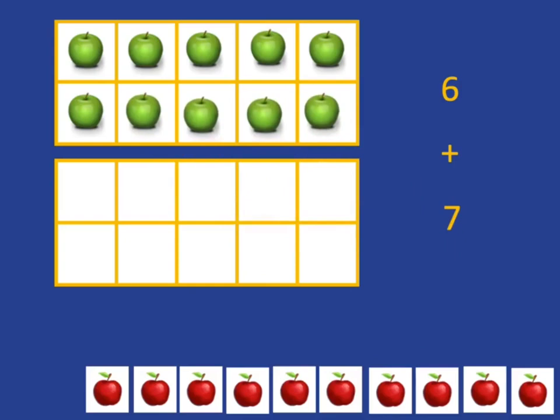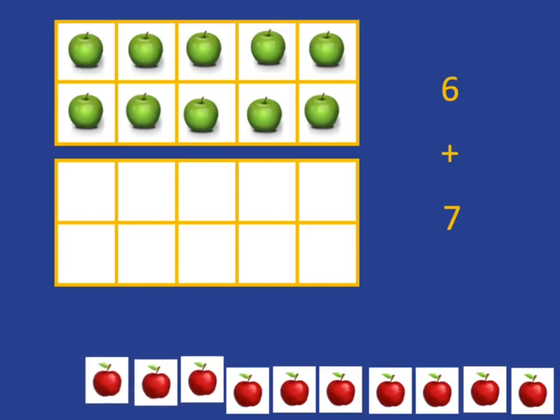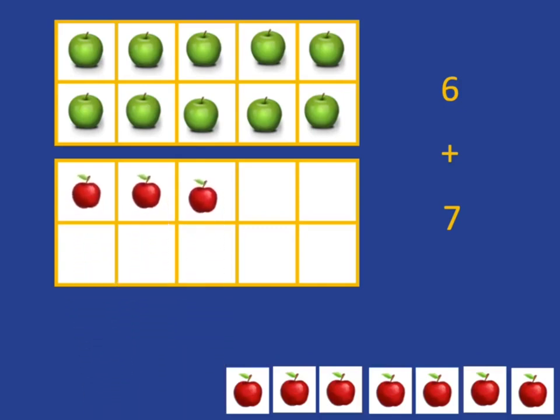But then we've only added on 4 so far, and we actually needed to add on 7. So we need 3 more apples, and then we can very easily see that what we have here is 10 plus 3, which is 13. So 6 plus 7 gives me 13.